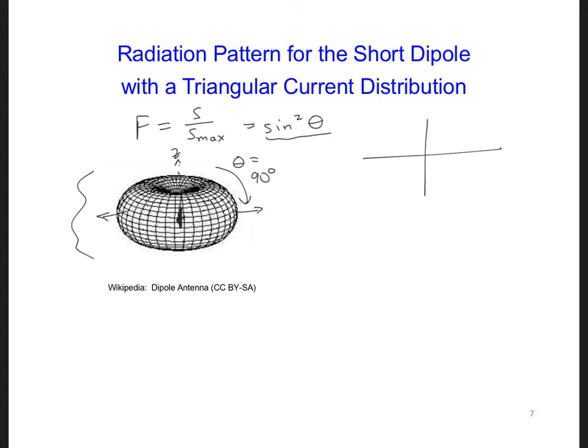So for our elevation plot, here's our dipole. You'll see something like this, cutting through the middle of the donut shape.